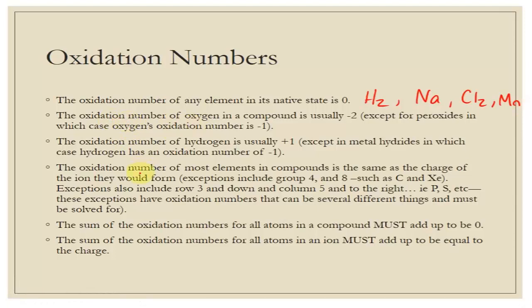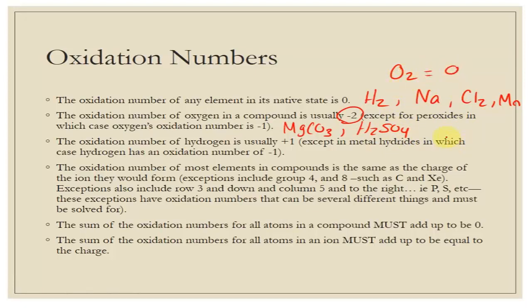The oxidation number of oxygen in any compound is minus two, unless it's a peroxide — which is rarely used — then it would be minus one. So in magnesium carbonate, oxygen is minus two. In sulfuric acid, oxygen is minus two. The only exception is if oxygen is in its native state like O₂, then it's zero, or if it's in a peroxide.